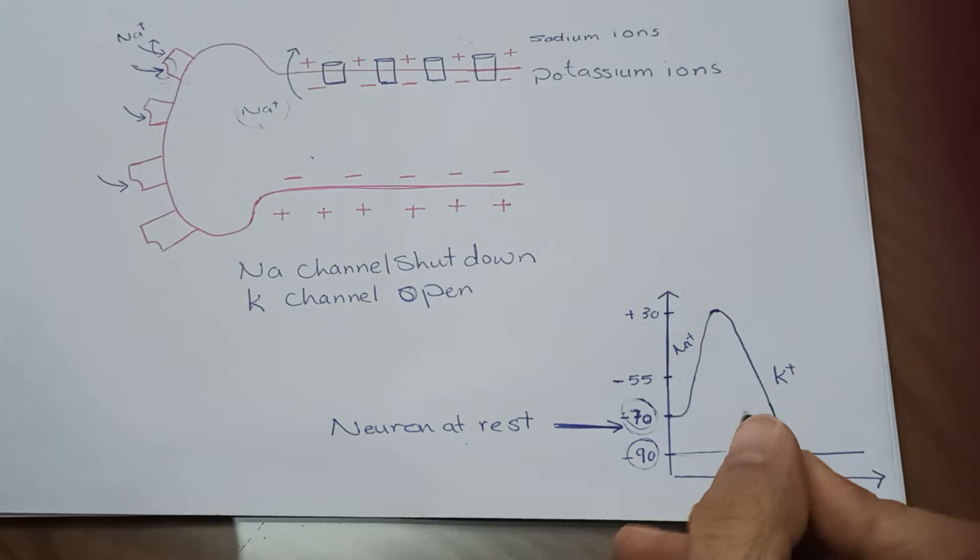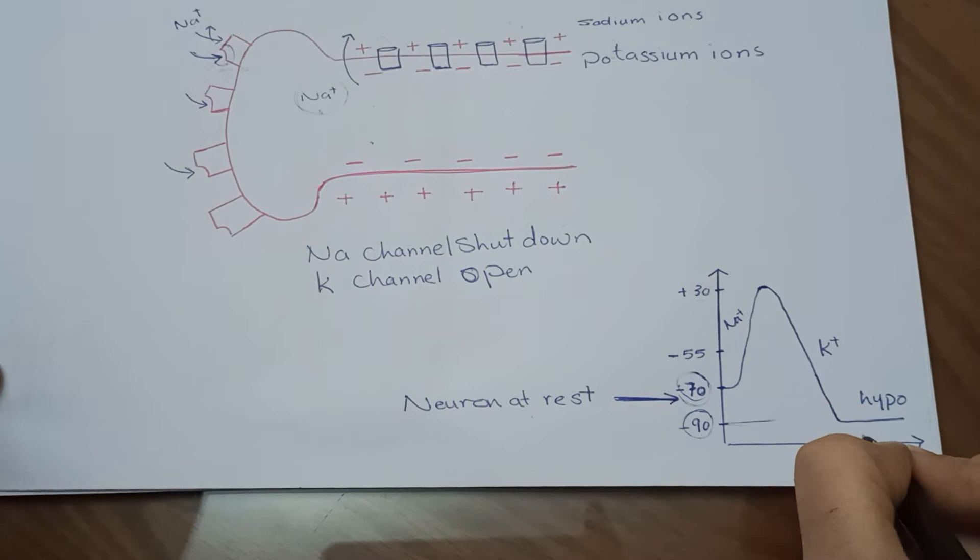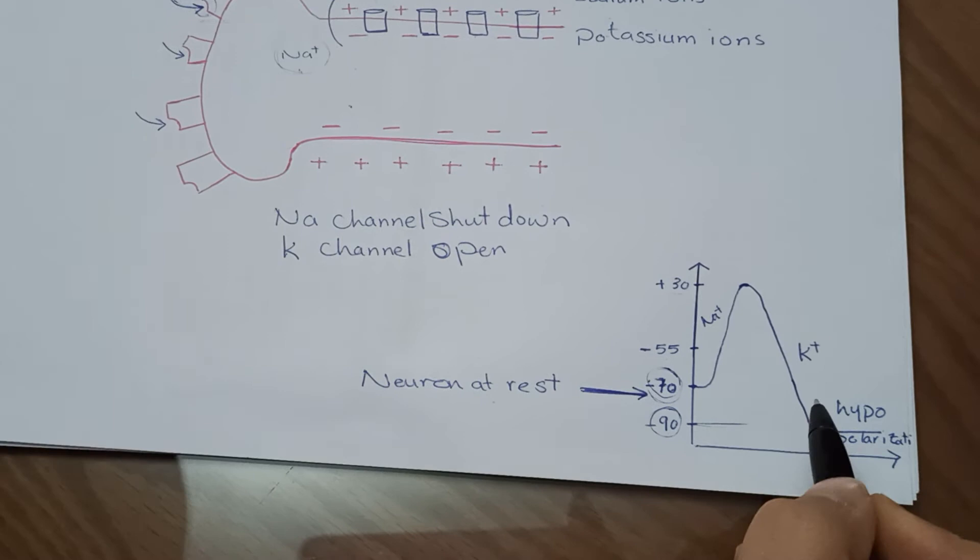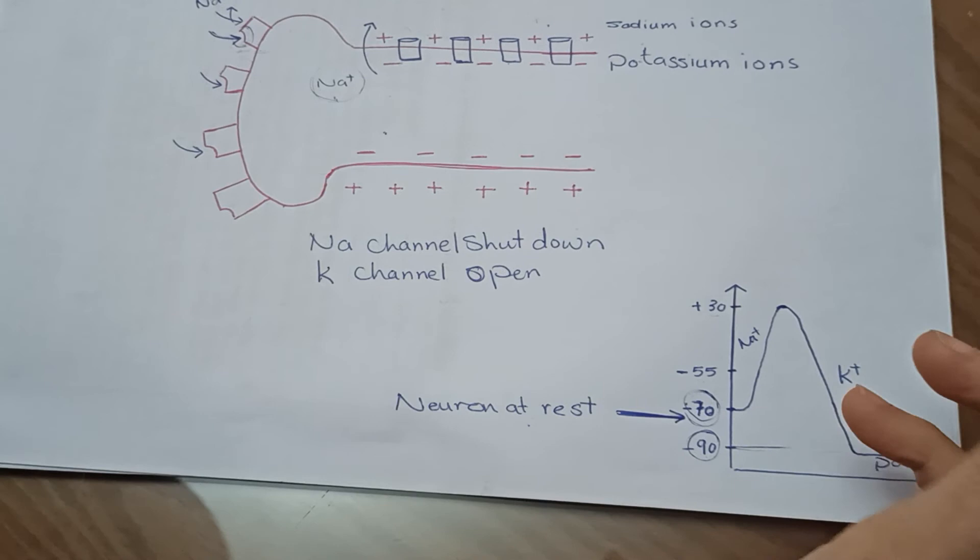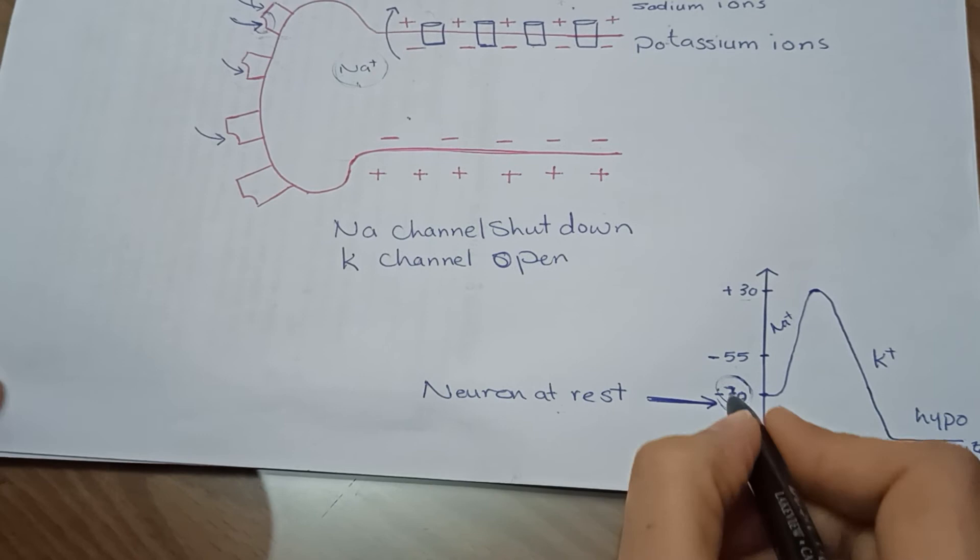This is called hyperpolarization. What is meant by hyperpolarization? This means you can't trigger this neuron anymore right now to give you a quick strong response. It is below the threshold by a very big difference.